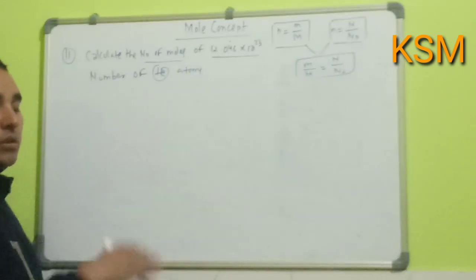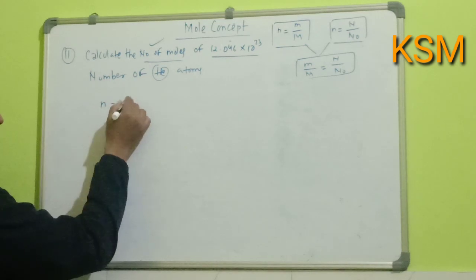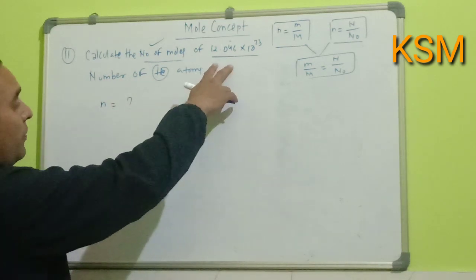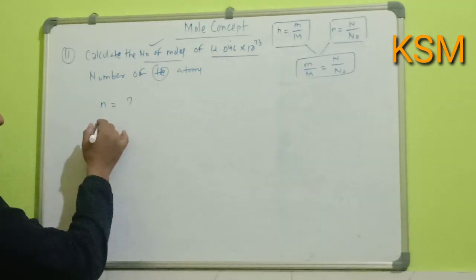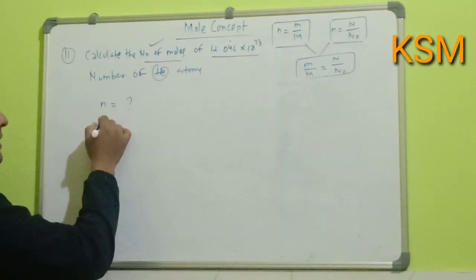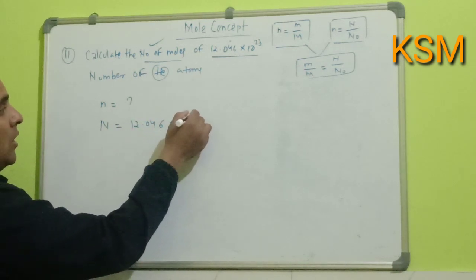In this question, the particle is helium atom and we have to find the number of moles, meaning small n is not given. It is given that this many helium atoms are present, so capital N is given as 12.046 × 10^23.